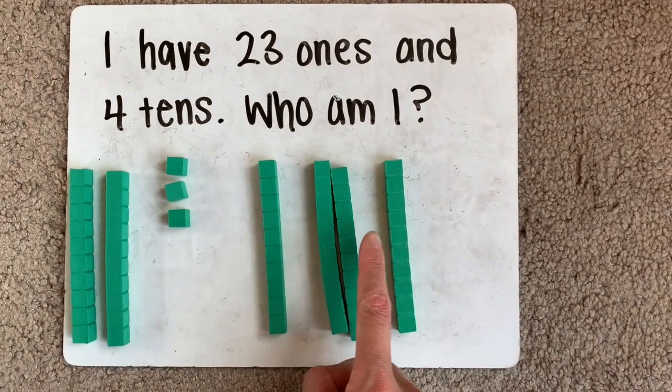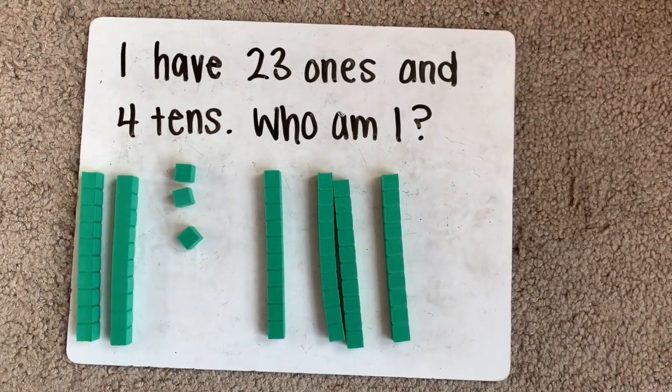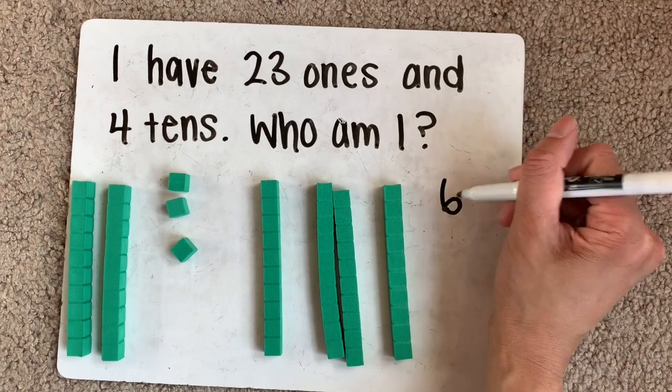Let's see how many tens we have now. 1, 2, 3, 4, 5, 6 tens and 1, 2, 3 more. So our number is 63.